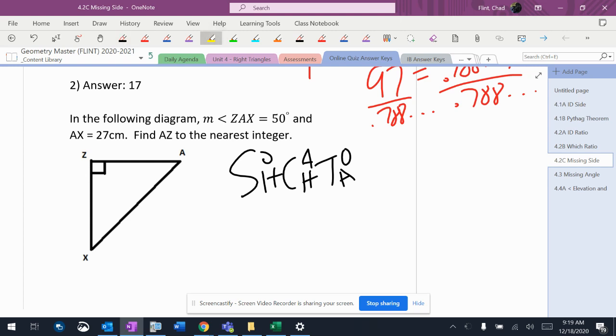SOHCAHTOA, which is over here, it tells me that AX is 27 and it wants me to find AZ.